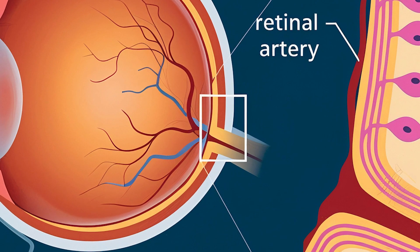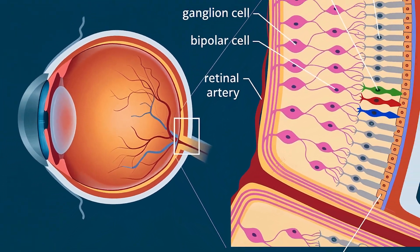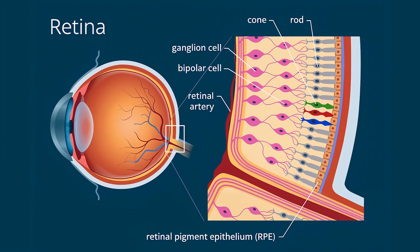The central region of the retina, called the macula — and within it the fovea — is densely packed with cones, making it crucial for tasks requiring detailed vision such as reading. The retina converts light into electrical impulses that are transmitted through the optic nerve to the brain, where they are interpreted as visual images.